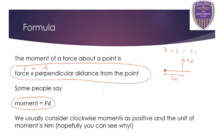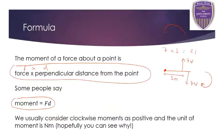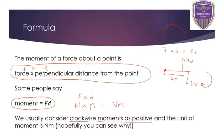A moment could create a clockwise rotation or an anticlockwise rotation. This force here would make the body rotate anticlockwise, but if I put the force going downwards, that would create a clockwise turn. Normally people think about clockwise moments as positive, so any anticlockwise moment would be a negative moment. The unit of moments is Newton meters - because we're doing force times distance: force is measured in Newtons, distance in meters, so the units are Newton meters.